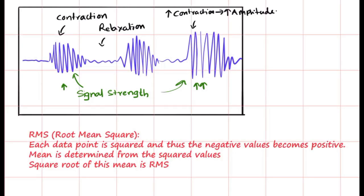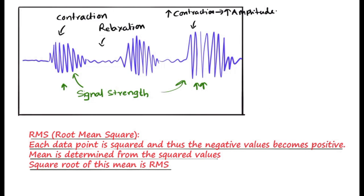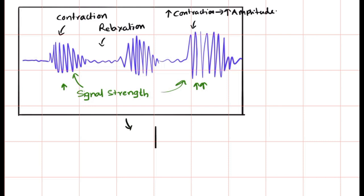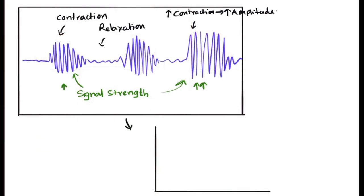The RMS: each data point is squared, then the negative values become positive. The mean is determined from the square values, and the square root of this mean is RMS. RMS is the average amplitude of the signals, which is taken on the y-axis, and the force or maximum voluntary contraction is taken on the x-axis.